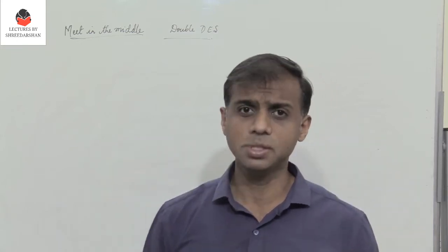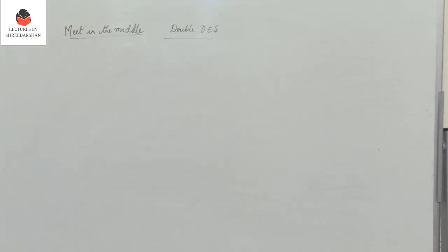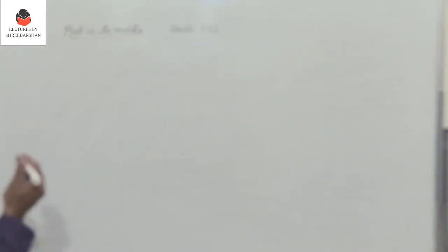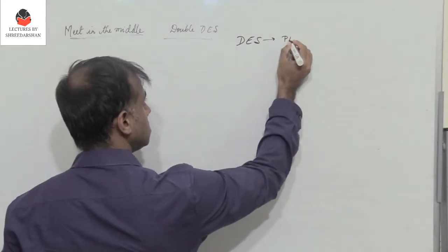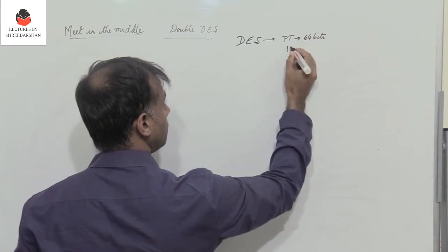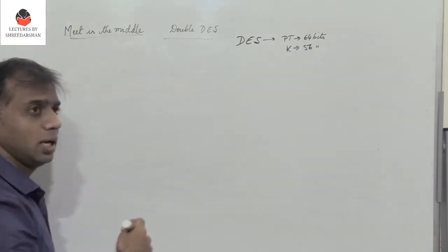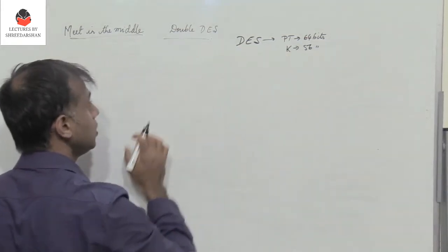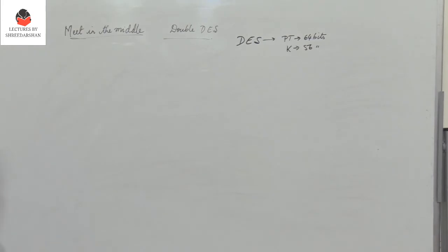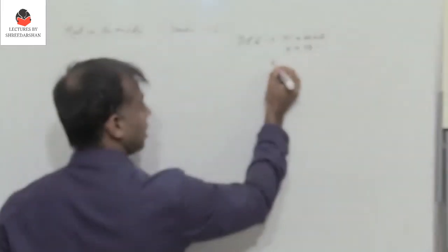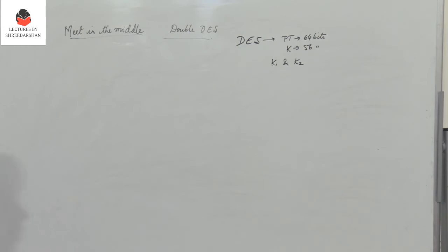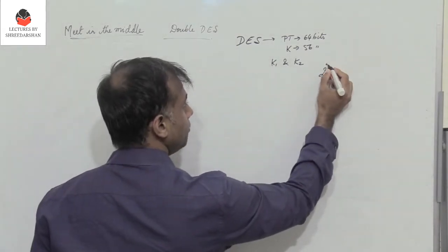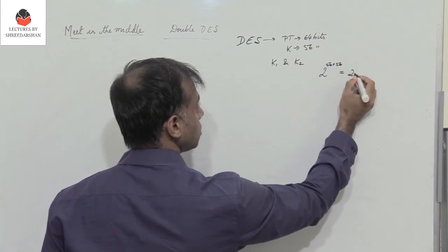What is the meet-in-the-middle attack? In double DES, we have the encryption process done two times. As a recap of DES: in the Data Encryption Standard, the plain text is of length 64 bits, whereas the key is of length 56 bits. So if I use double DES, that means I use the encryption algorithm two times, using two keys K1 and K2. K1 is of length 56 and K2 is of length 56. So ideally, we need to have a security of 2^(56+56), which is equal to 2^112.